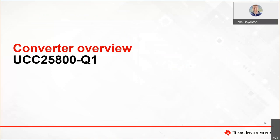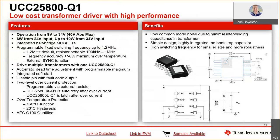Now that I've covered a few controller options, I will get to our newest products, which are focused in the converter and module groups. Specifically, I will focus on the UCC25800-Q1. The UCC25800-Q1 is a low-cost transformer driver with high performance. It can take in a wide voltage input range of 9 volts up to 34 volts, and within that range, the power output scales with input voltage. This type of product is fairly new on the market, as most transformer drivers have typically operated from a low voltage of 5 volts. It runs with a fixed frequency at 50% duty cycle and an open loop control method for simplicity and consistent performance, even with load variations.